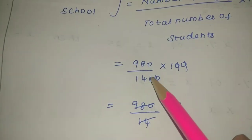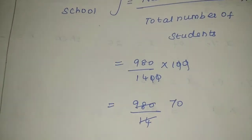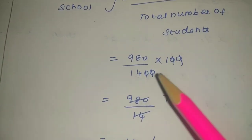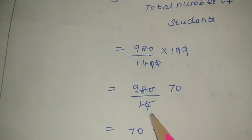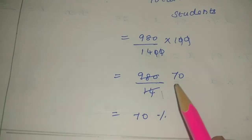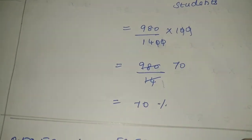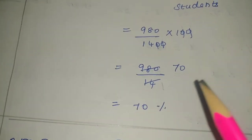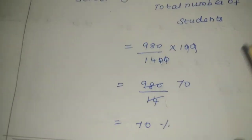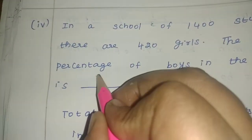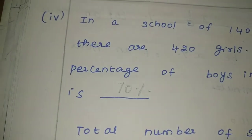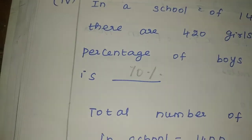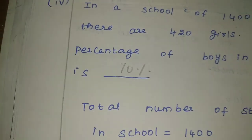The two zeros cancel. So we get 980 by 14. Using the 14 times table: 14 times 70 equals 980. So the percentage of boys in the school is 70 percentage. Clear.